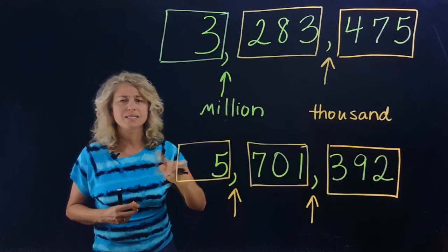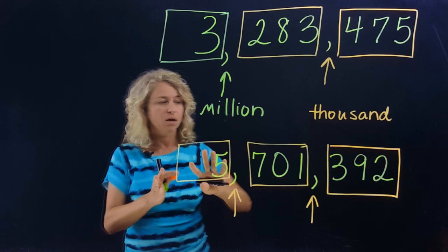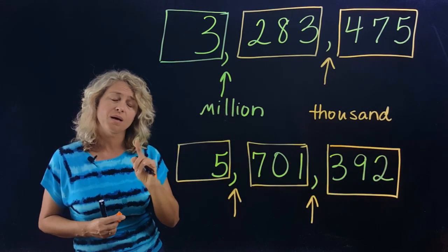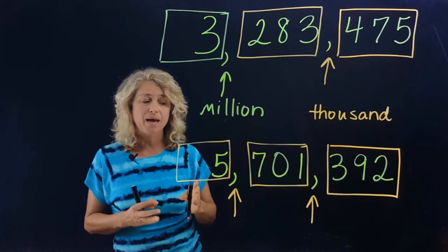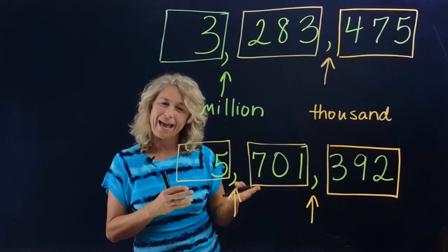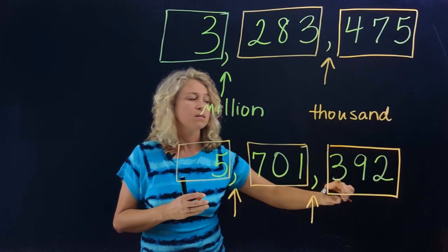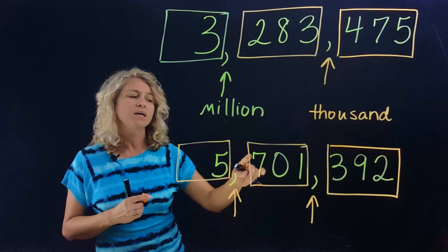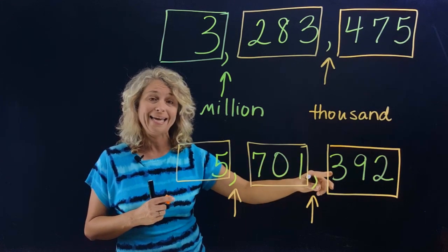Did you notice that I did not say the word 'and' when I said this number? And that's a really common error that a lot of students make when they say these larger numbers. They'll put the word 'and' somewhere around in here, and they might say five million, seven hundred one thousand, and three hundred ninety-two.